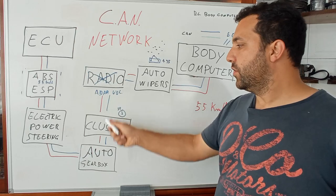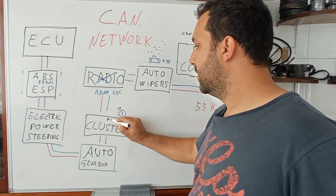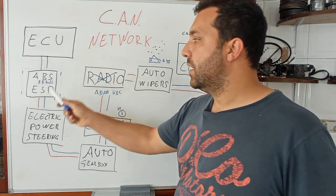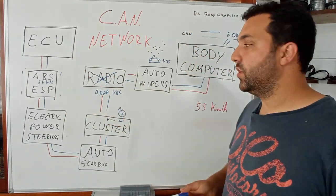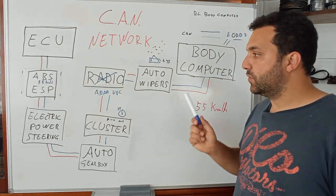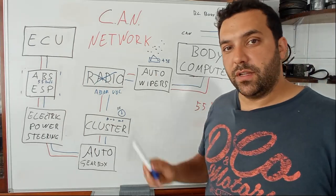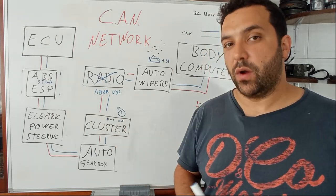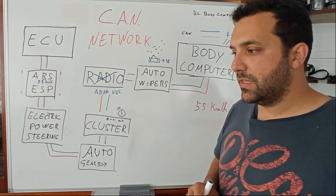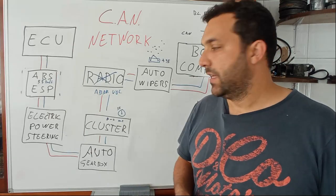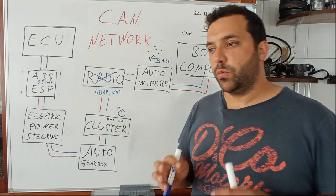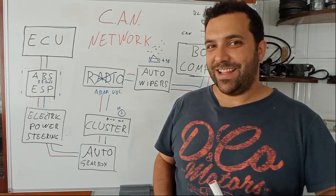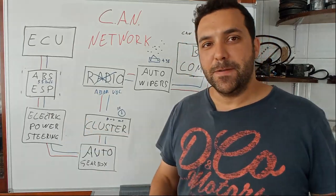If any one of the units stops working, on your cluster the kilometers or miles start to blink — I already did a video about that. The body computer knows how many units are talking and working with each other, and as soon as one stops communicating, it orders a blink of the odometer toward the driver. It's not just another warning light — a flashing of the kilometers or miles really scares the driver, and for a good reason, because if you lose the ABS everything goes wrong.